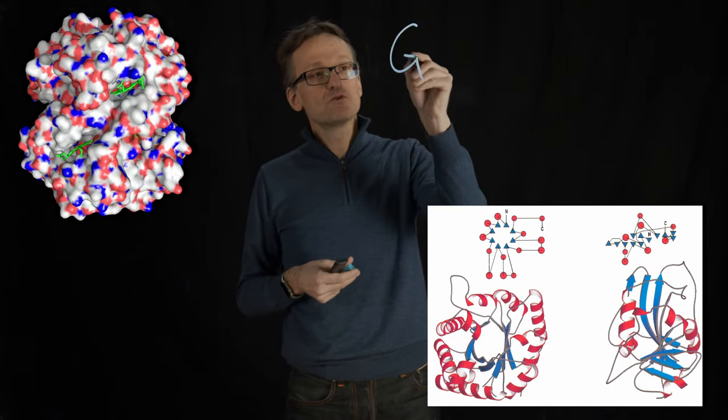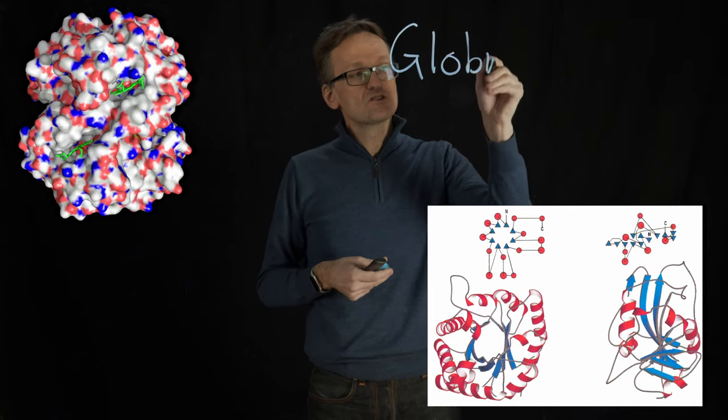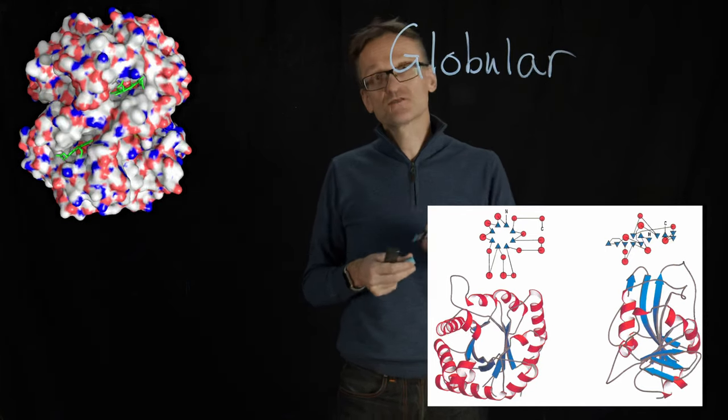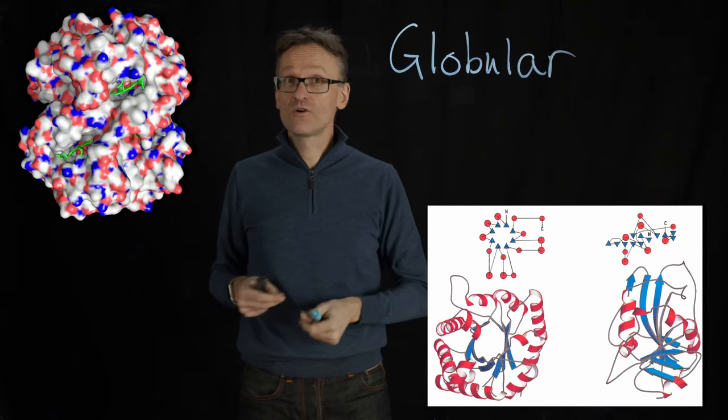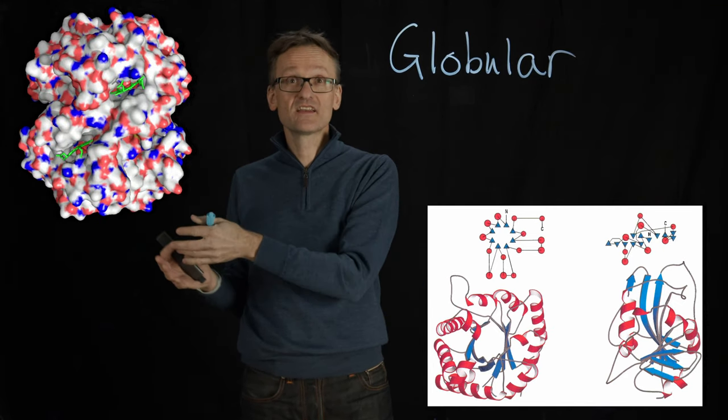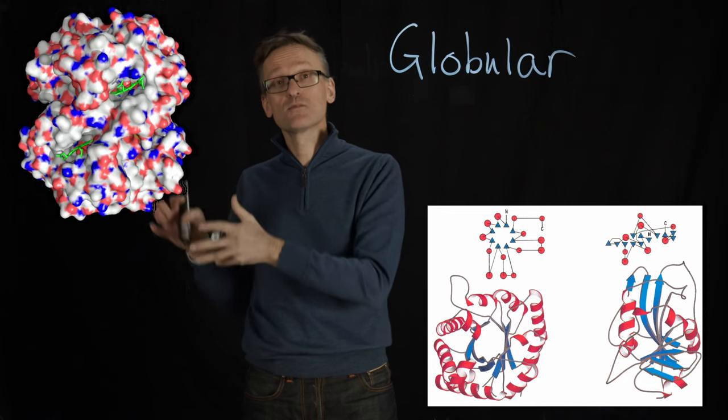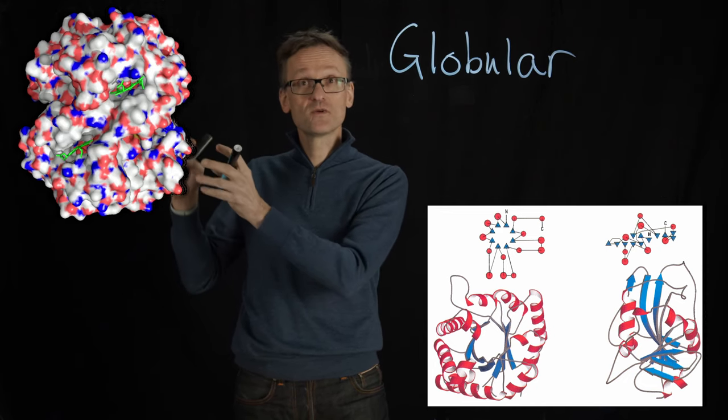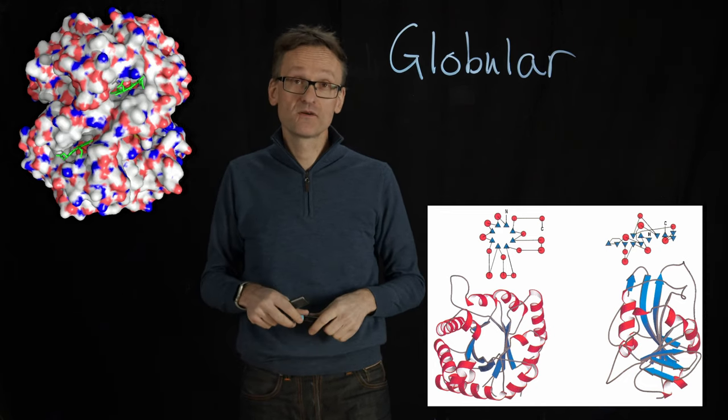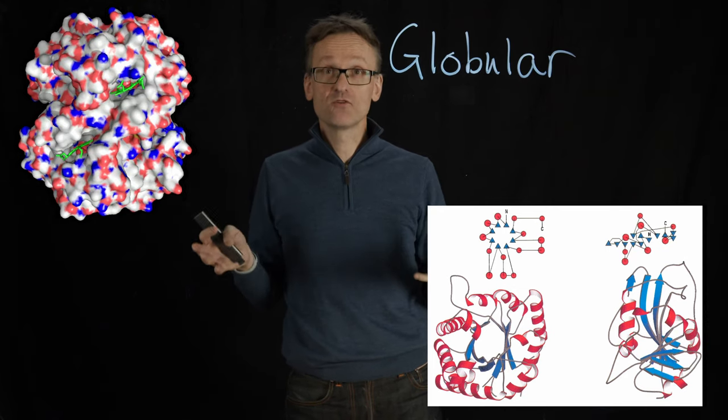The reason for that is mostly historical. Some of the very first folds we determined were this hemoglobin and then its sibling myoglobin. Hemoglobin is four units and myoglobin is just one but the units are very similar. And that unit is called a globin fold.